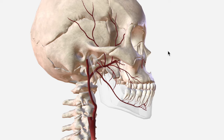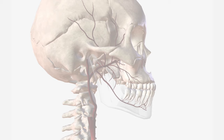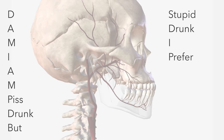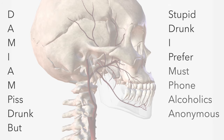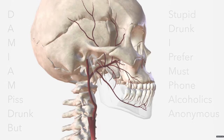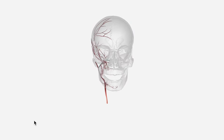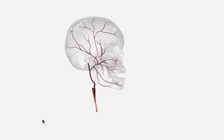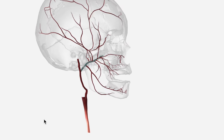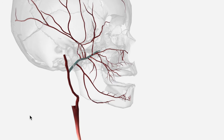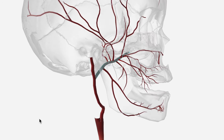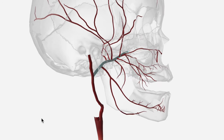So there we have it — all 16 branches of the maxillary artery. We can remember them with the mnemonic: 'Damn I am piss drunk, but stupid drunk I prefer, must phone Alcoholics Anonymous.' Let's bring in a version of the model with all the bones of the skull made transparent, showing the maxillary artery in cyan in the center, and go through the mnemonic.